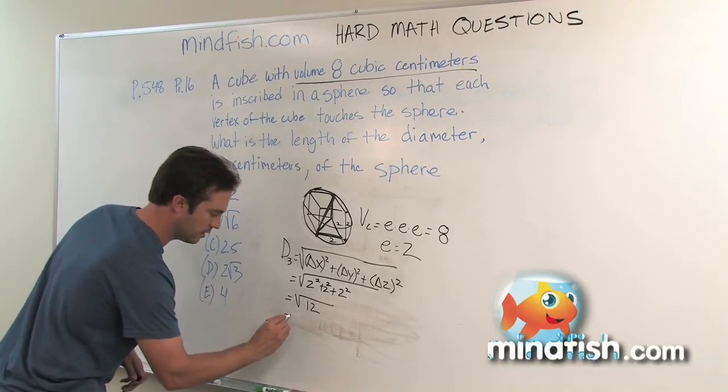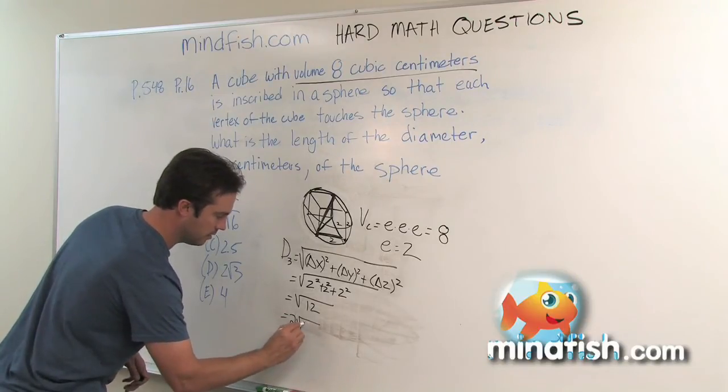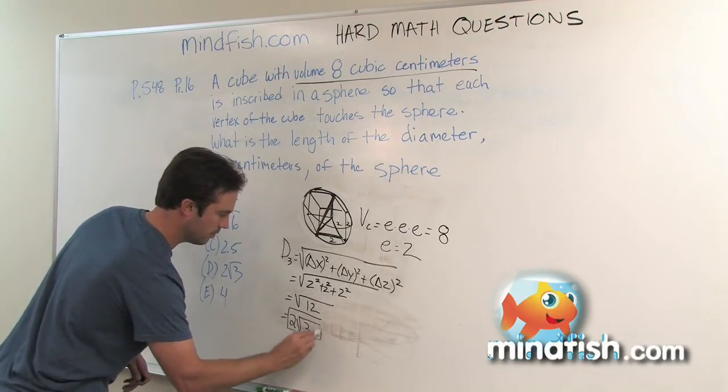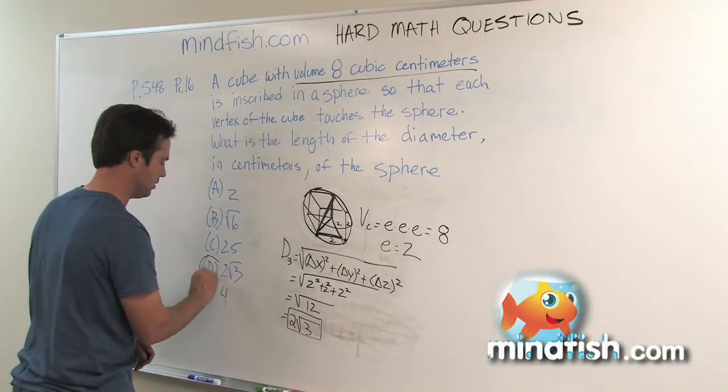Since it's a cube, the length, width, and height are all going to be two. This becomes the square root of two squared plus two squared plus two squared, which is the square root of twelve. Four goes into twelve, so I can take out a two and this becomes two square root of three, which is answer choice D.